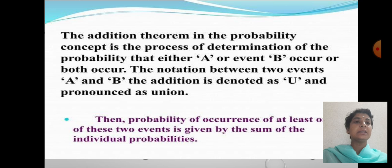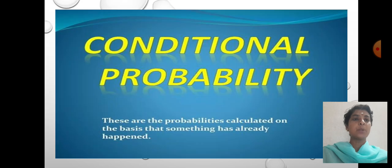The addition theorem in the probability concept is the process of determination of the probability that either event A or event B occur or both occur. The notation between two events A and B, the addition is denoted as U and pronounced as union. Then probability of occurrence of at least one of these two events is given by sum of the individual probabilities.